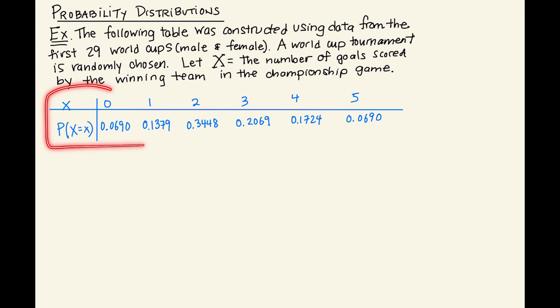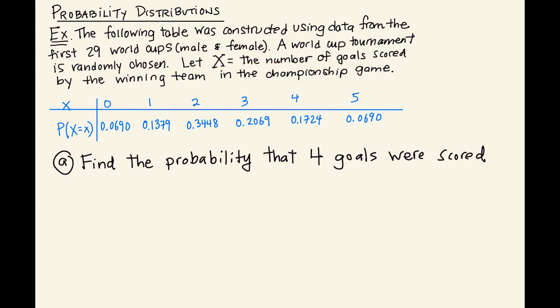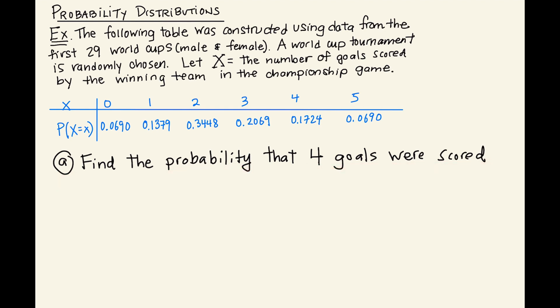This is indeed a probability distribution for our random variable X. The first question: we want to find the probability that four goals were scored. If I randomly select one World Cup game from the 29, what is the probability that exactly four goals were scored? Using probability notation, P(X = 4) = 0.1724.